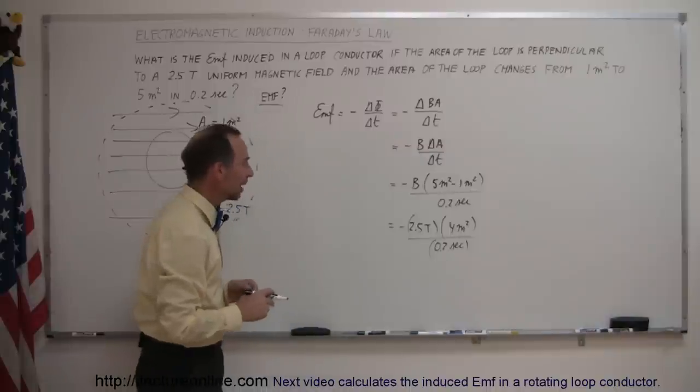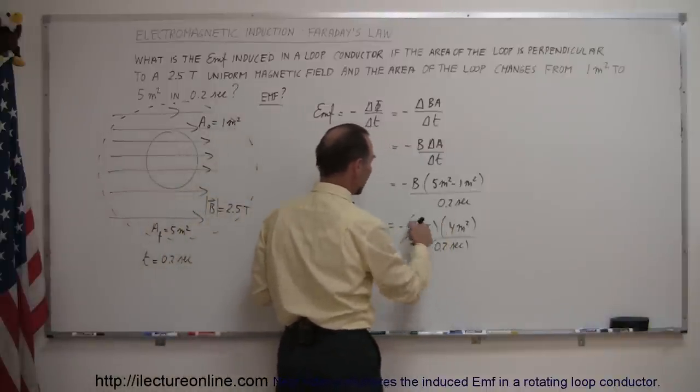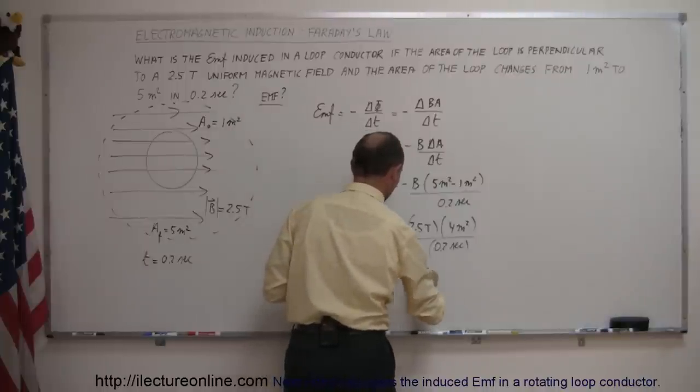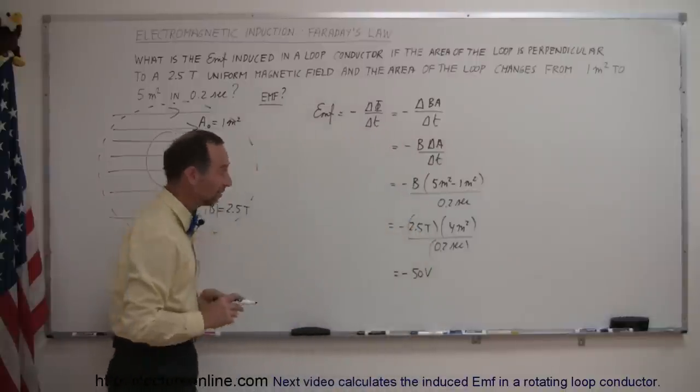All right, that would be 4 divided by 0.2, that is 20, times 2.5, which is 50, so this is equal to minus 50 volts. Again, tesla meters squared per second is indeed volts.